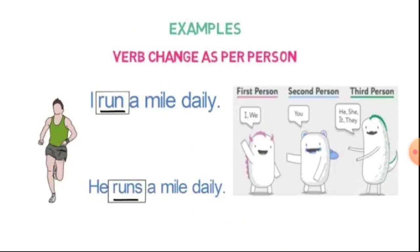We will see next example: verb changes as per person. The first example is I run a mile daily. I am the first person, so run. In present indefinite tense with first person, we use the base form. And in the second example, you can say he runs a mile daily.